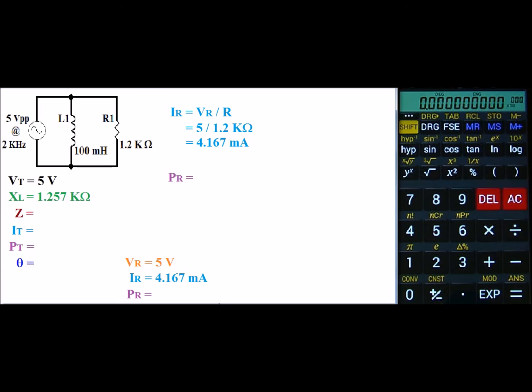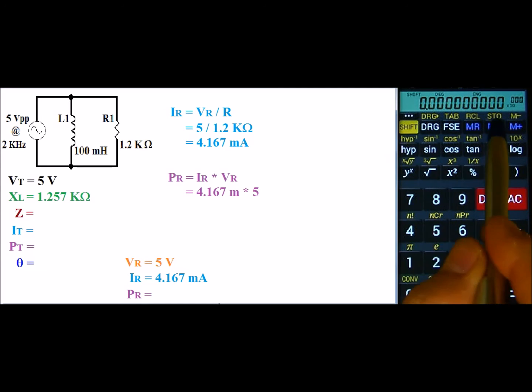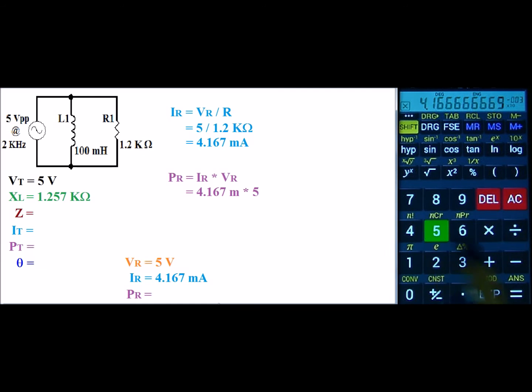Next, we can find PR. Using Watt's law, PR is IR times VR. So that's 4.167 milli times 5 volts. So I'll go ahead and I'll recall my current and multiply it times 5. And that gives us a power of 20.833 milliwatts.